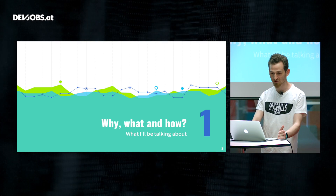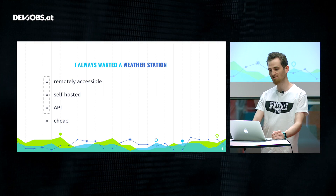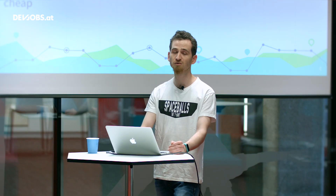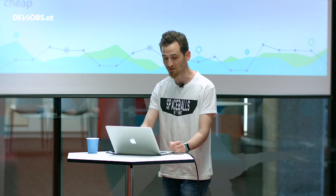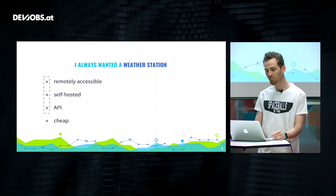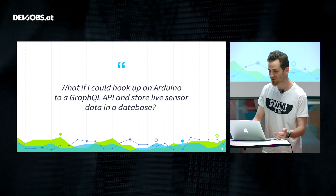So to begin with the why, what, and how: the main motivation was that I always wanted a weather station, and instead of just buying one I thought I'd face the challenge of building one on my own. For that I defined four must-have features: it should be remotely accessible, self-hosted so I own my data and avoid any subscription fee, it should have an API so querying and updating data is as easy as possible, and it should be as cheap as possible since I considered it a hobby project.